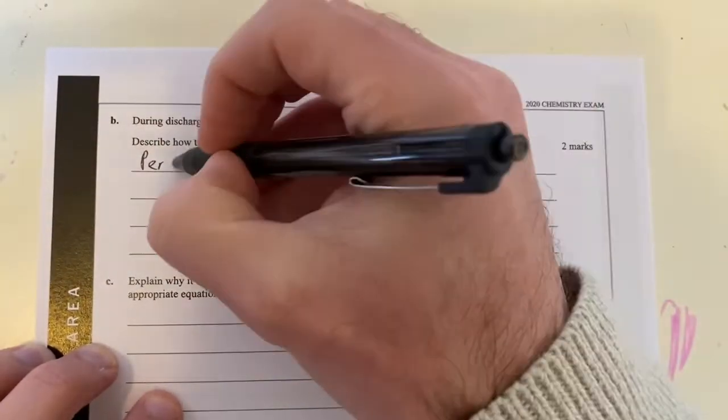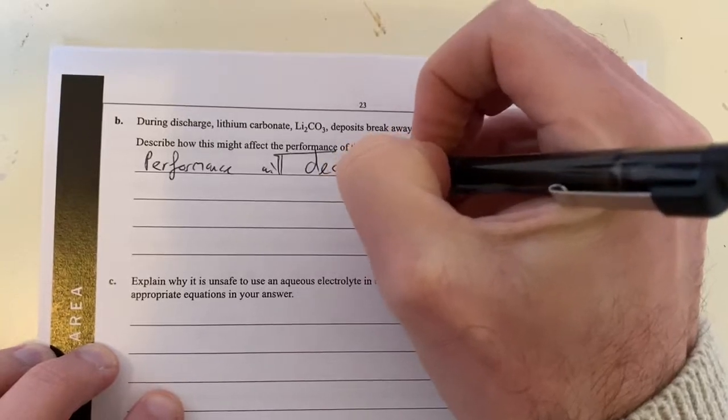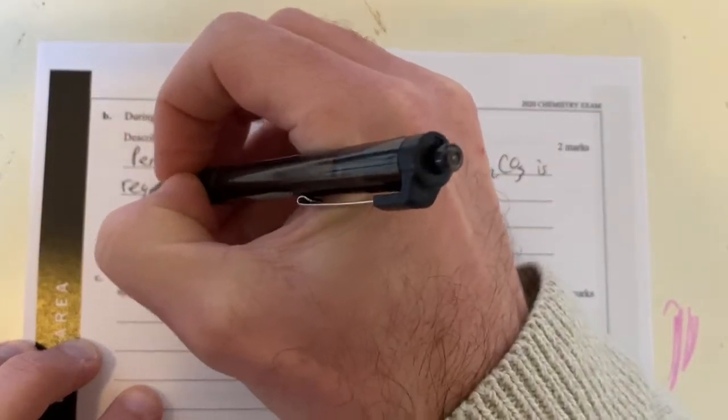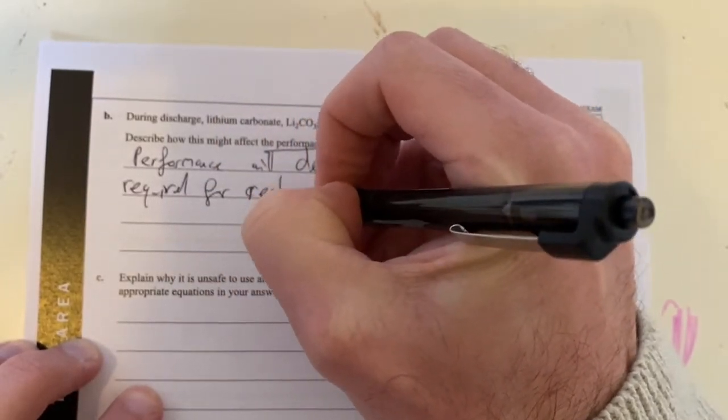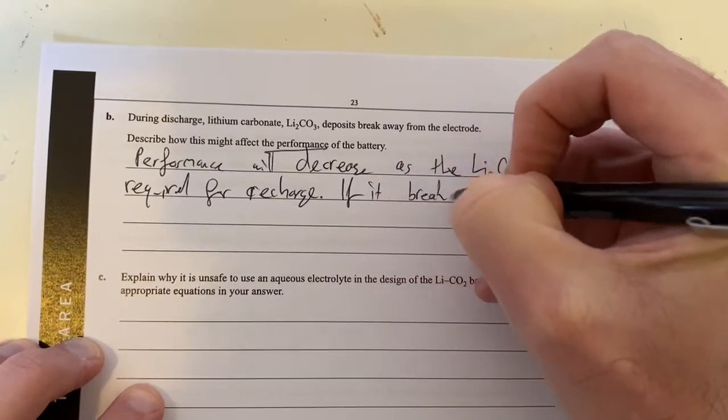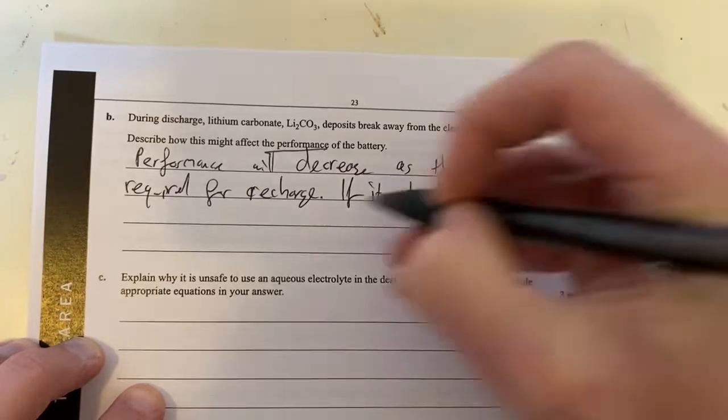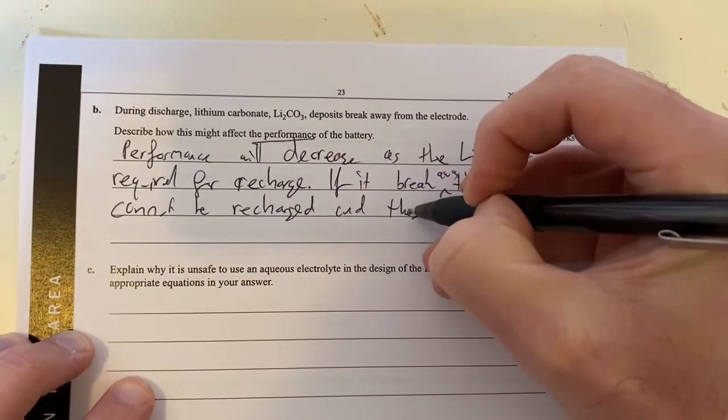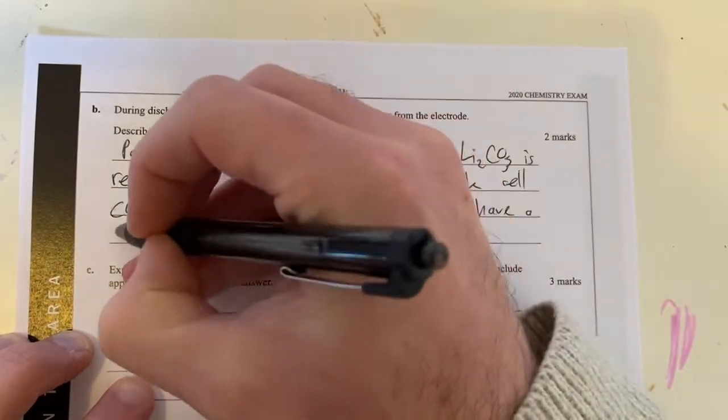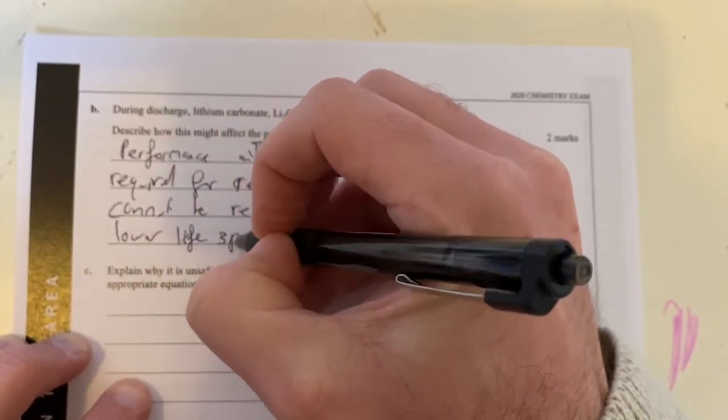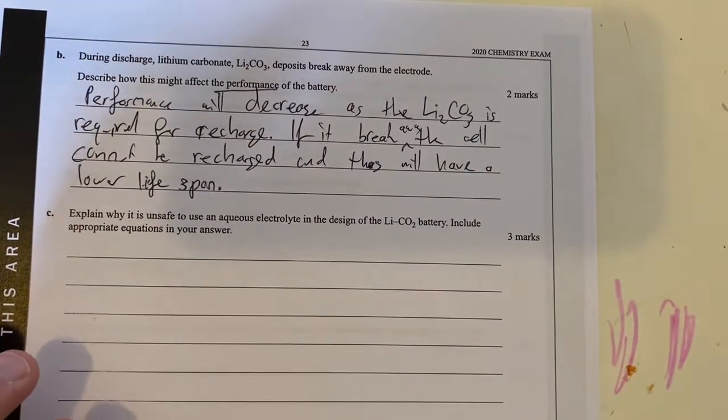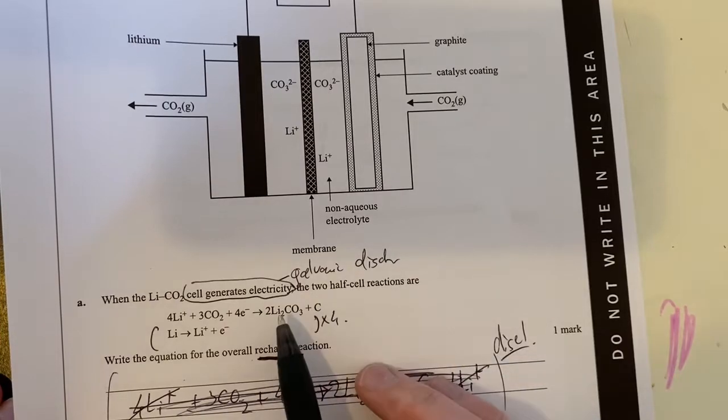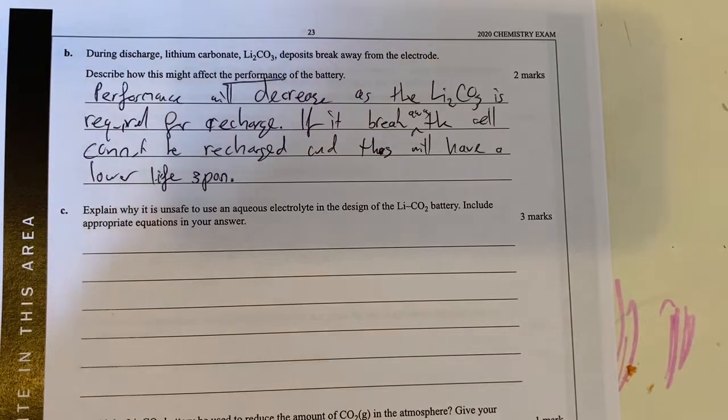Therefore I'm going to say the performance will decrease as the Li2CO3 is required for recharge. If it breaks away, this cell cannot be recharged and thus will have a lower lifespan. That's probably a bad use of words, but that's the idea there. The key thing here is the fact that this is a rechargeable battery and our products of our reaction that produces electricity, they must stay in contact with the electrode. If that breaks away, it cannot be used to recharge it. So therefore, the battery will actually die, basically.